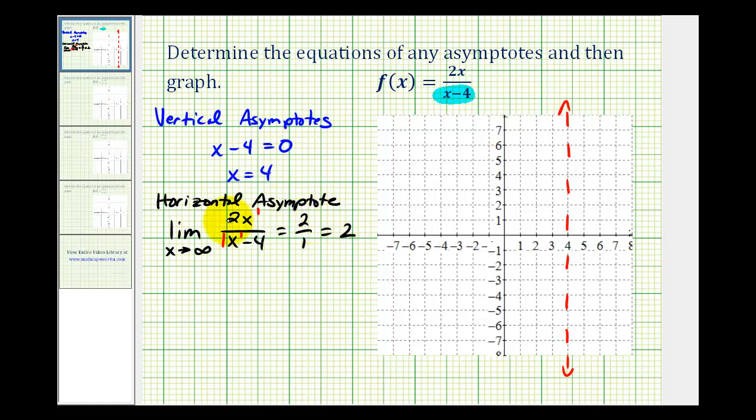So the horizontal asymptote of this function would be y equals two. Now let's go ahead and sketch that.